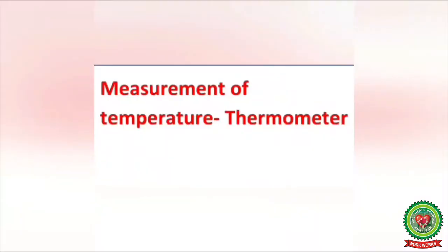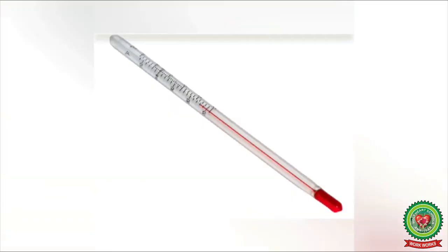Now let us study the measurement of temperature and the thermometer. A thermometer is used to record the temperature of air. A thermometer is a glass tube filled with mercury at the bottom. Mercury and the thermometer glass both expand when heated, but mercury expands more than the glass when heated, and cools down and shrinks more rapidly than the glass tube.